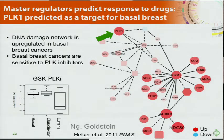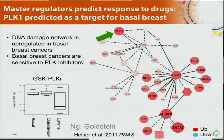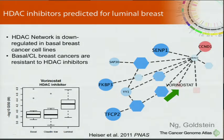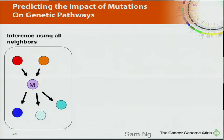We can use that hairball to do a master regulators analysis, like Andrea Califano does with ARACNE. Looking upstream of a basal marker such as FOXM1 and reasoning up the regulation hierarchy, you see a polo kinase. The prediction is that basal cells will be more sensitive to a polo kinase inhibitor, and this pans out in a cell line model from Joe Gray's lab. The reverse is also true — looking up a luminal hub, it was an HDAC, so an HDAC inhibitor would be more sensitive in luminal cells, and that's what happens in these cell line models.